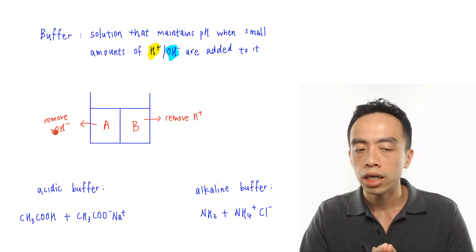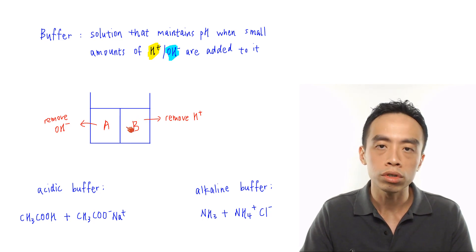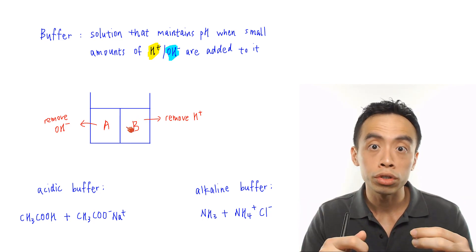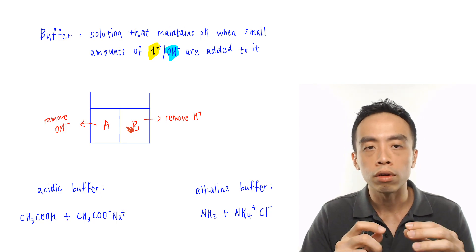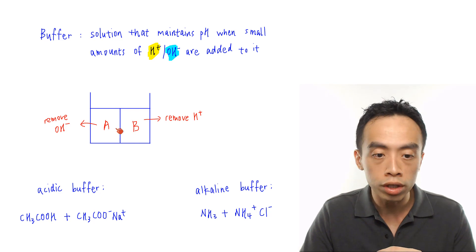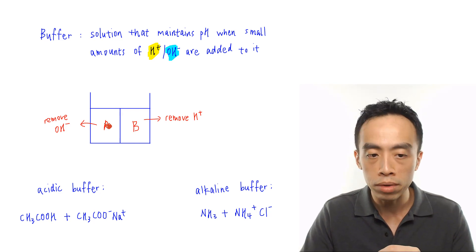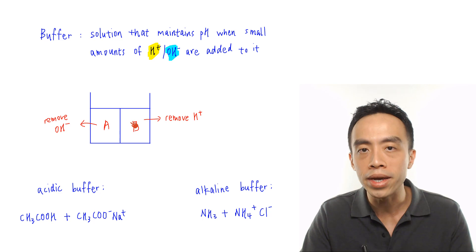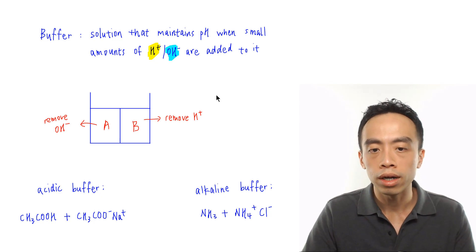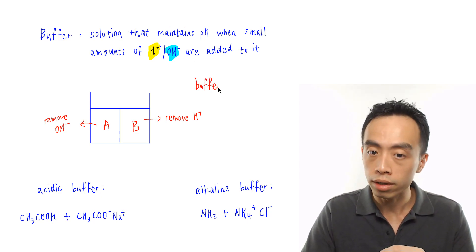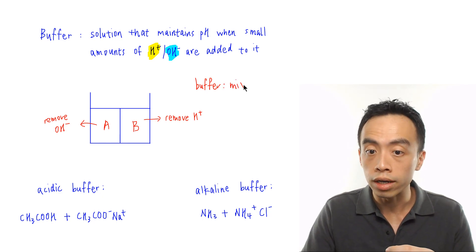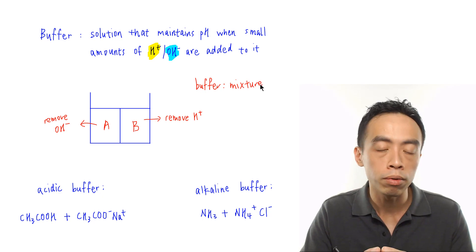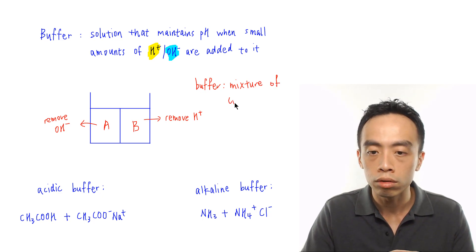Now the next question is: if I have an acid and a base inside the same solution, wouldn't they react with each other? For a buffer solution, it is a special mixture of acid and base — this mixture is called a conjugate acid-base pair. A buffer is a mixture of a conjugate acid-base pair.